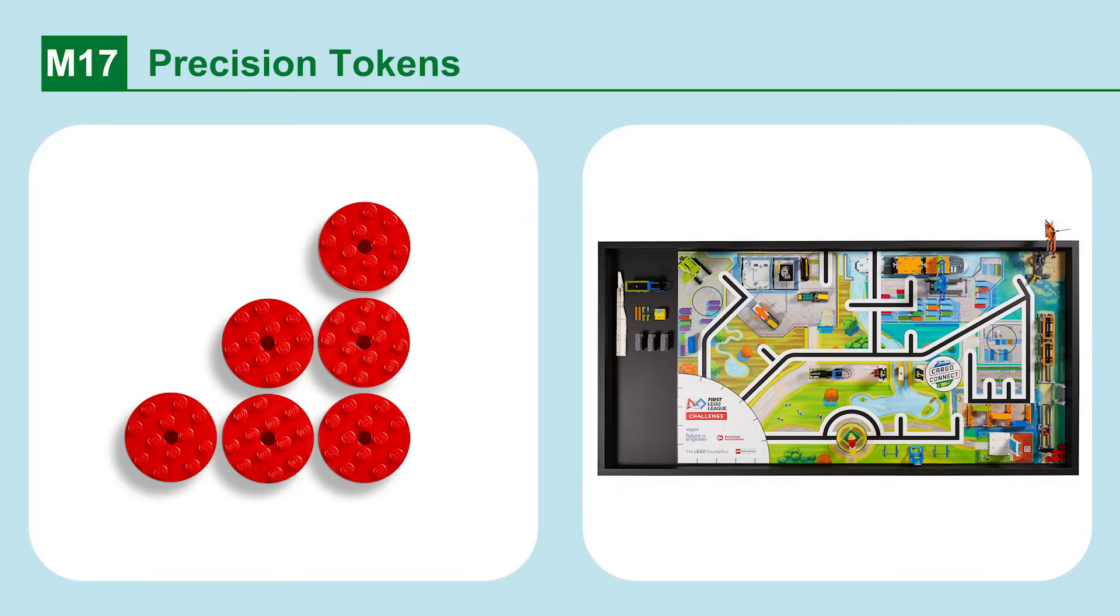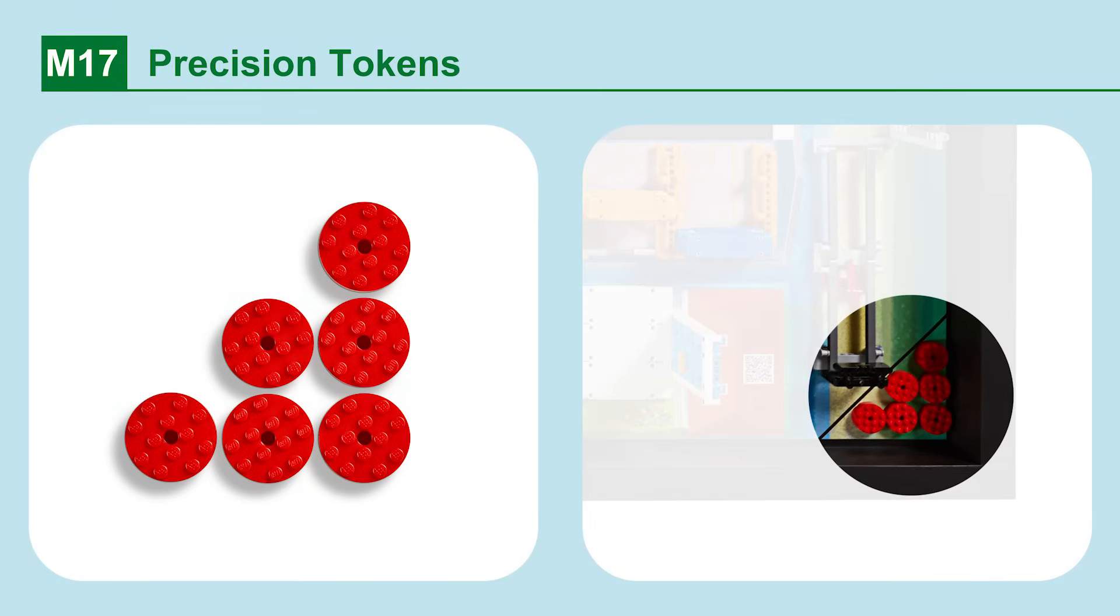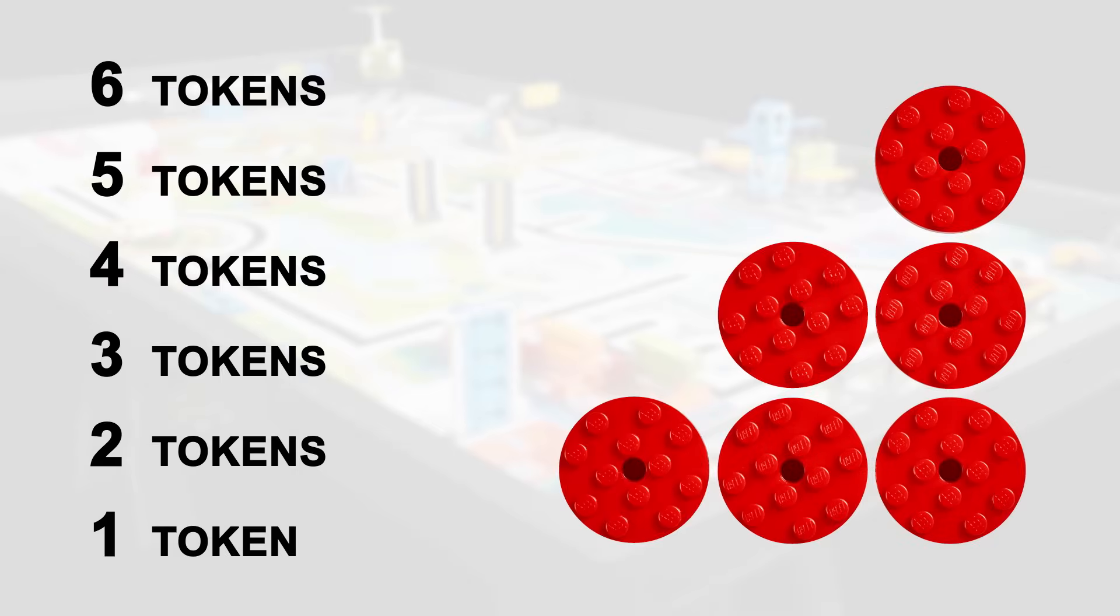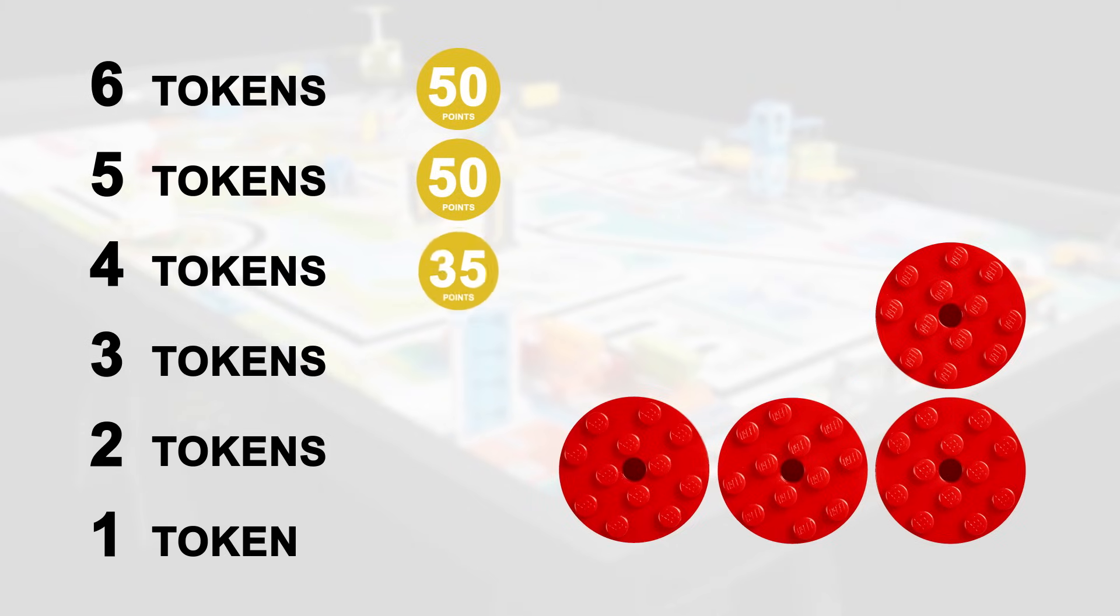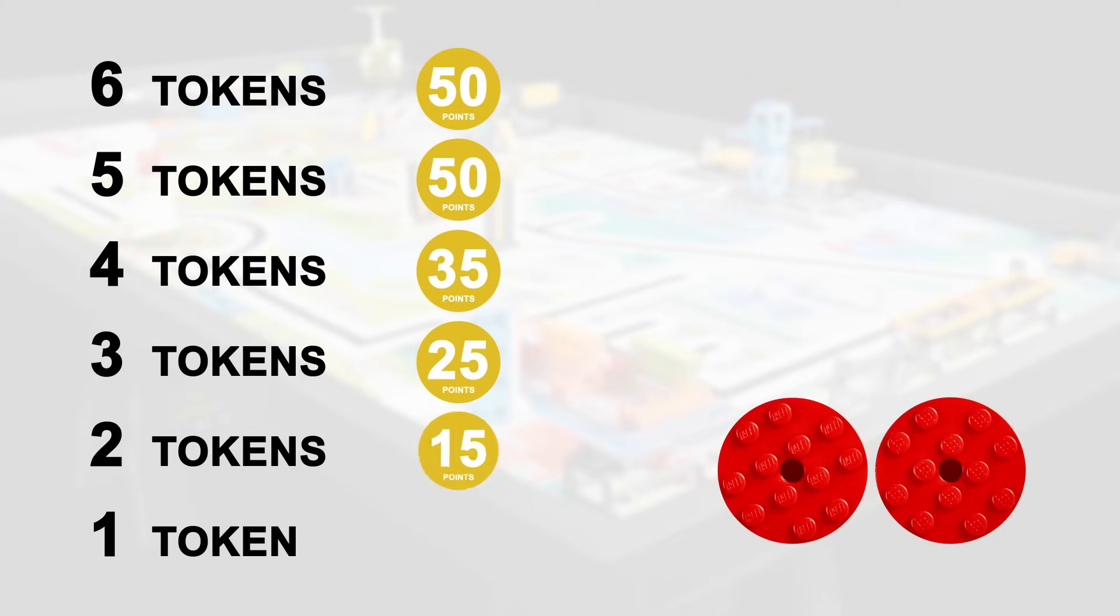Mission 17. Precision tokens. The less you interrupt your robot outside home, the more points you will keep. If you interrupt your robot outside the home area, you will lose a precision token. Precision tokens left on the field will result in extra points.